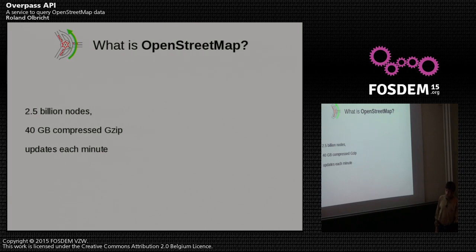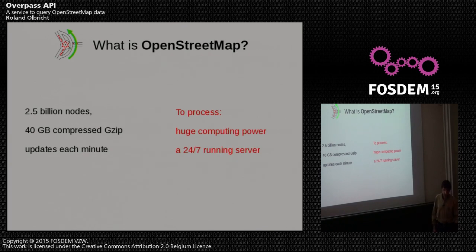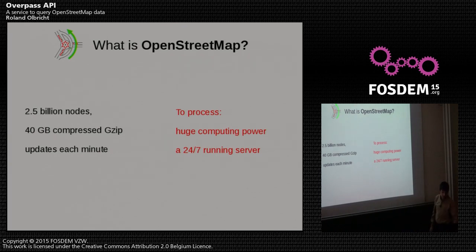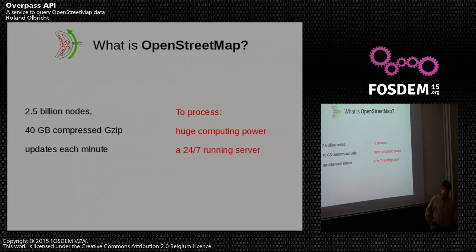Although it's great to have such a huge dataset, it's difficult to process it. If you really want to process this, you would have to run your own server with not insignificant computing power. If you just want to process this full data dump, we are offering a full data dump called Planet OSM, which is produced roughly once per week. And it's not unusual to have 24 hours to get this into a relational database.